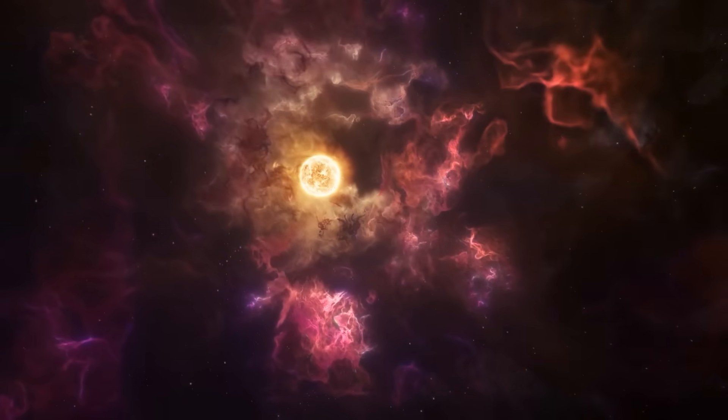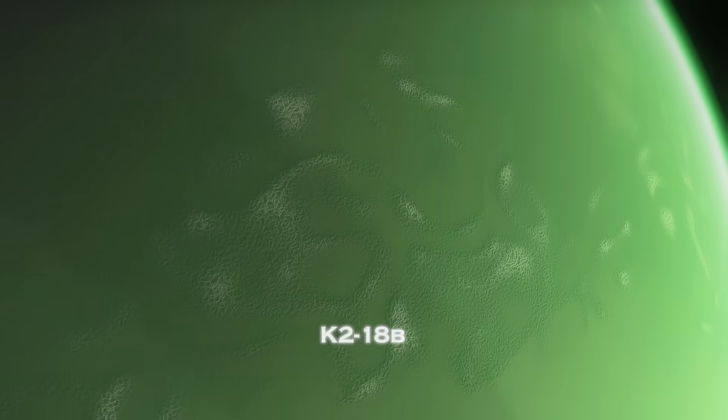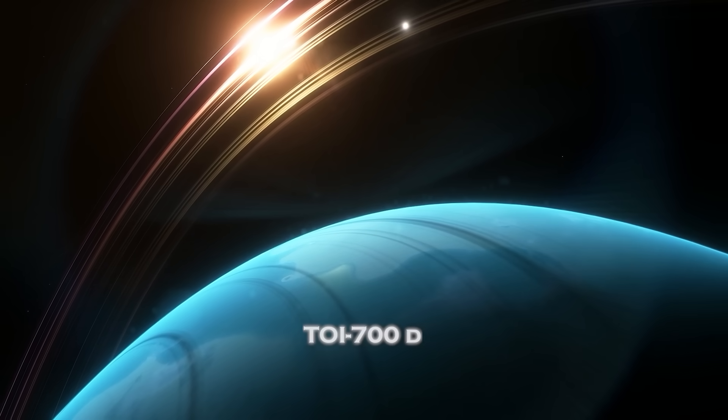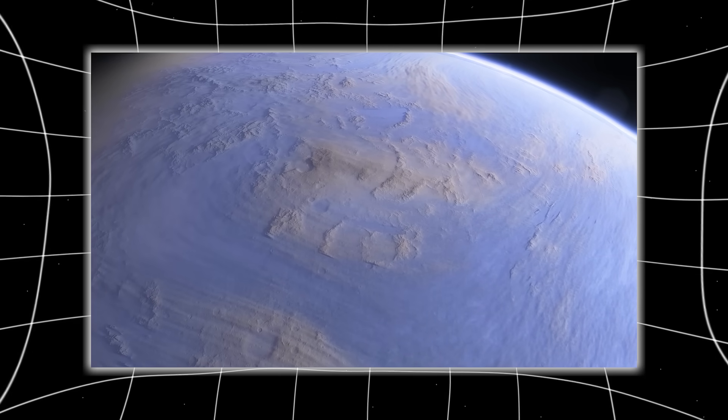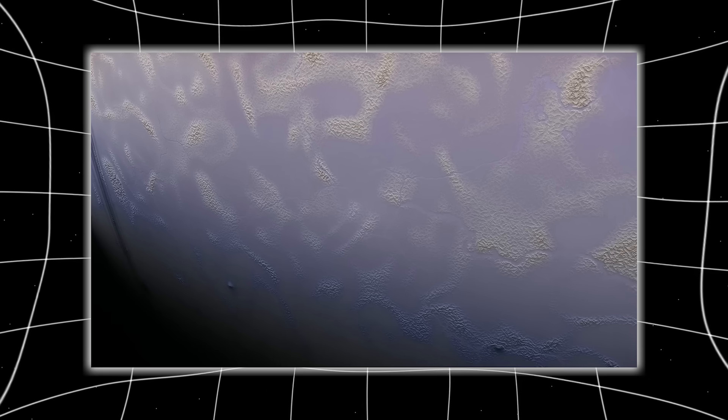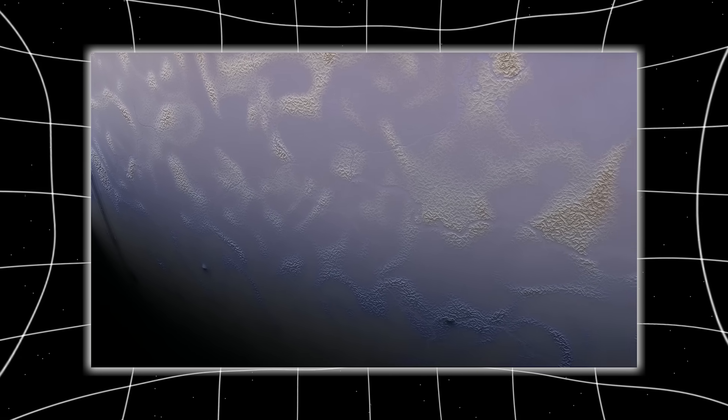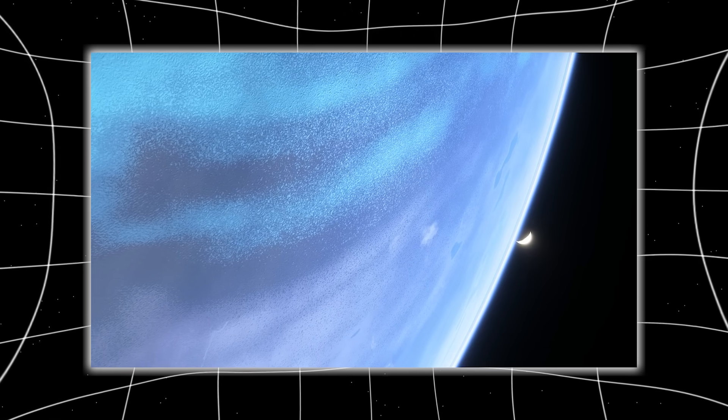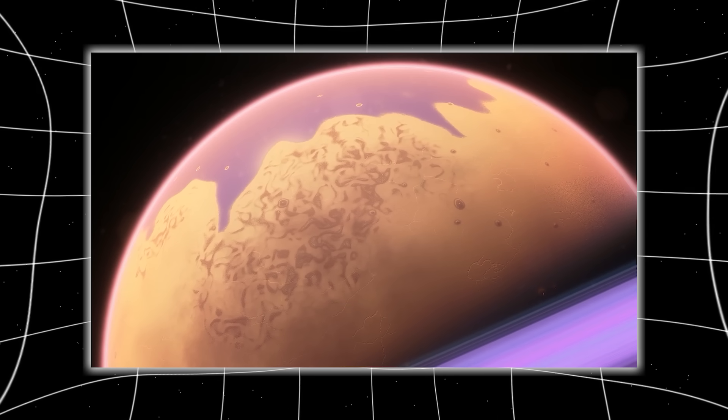In exoplanetary systems orbiting dim red dwarfs, several worlds, including K218b and TOI-700d, showed faint mid-infrared dips identical to Pluto's spectral haze lines. At first, it seemed impossible. These planets were far larger and warmer than Pluto, yet their atmospheres behaved the same way, glowing faintly, radiating away excess energy, stabilizing themselves.